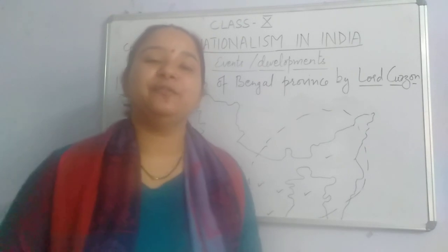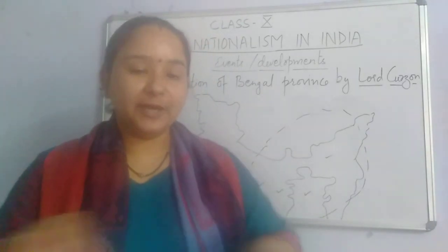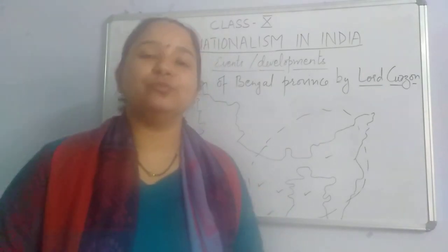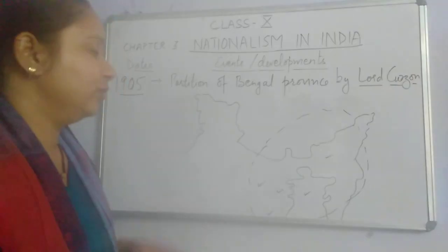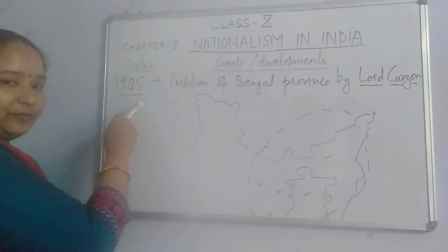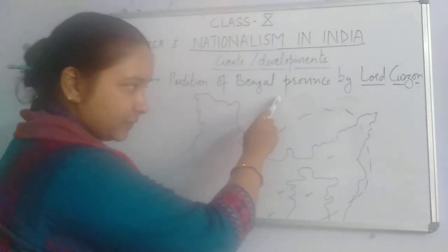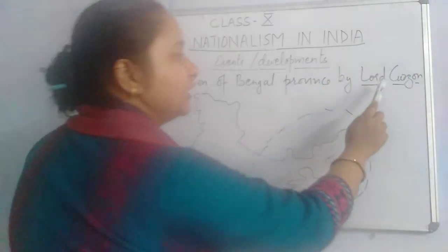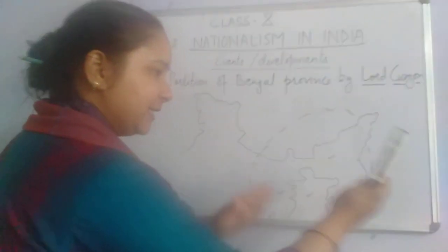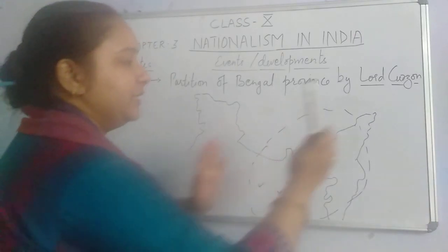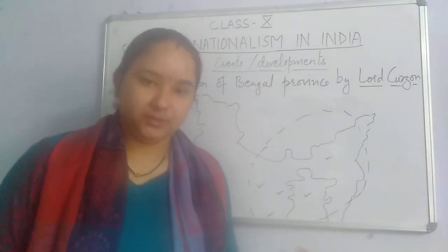That is why the British government took the decision to divide the population — to divide them and then rule this region. So, in 1905, the Partition of Bengal Province was done by Lord Curzon. They divided the province into two parts: East Bengal and Western Bengal. The eastern part was reserved for the Muslims and the western part for the Hindus.